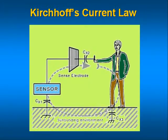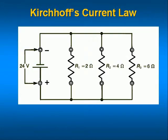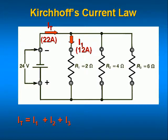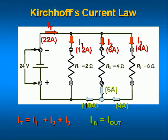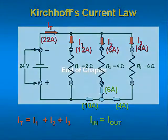Kirchhoff had a current law too — the current entering a junction must equal the current leaving that junction: I_in equals I_out. This means the sum of the branch currents must equal the supply current. So 12 amps plus 6 amps plus 4 amps must equal 22 amps supply current, and it does.